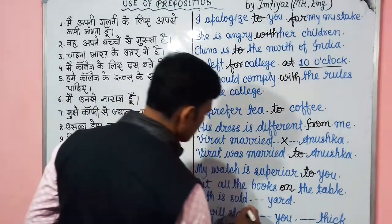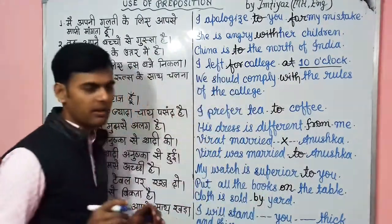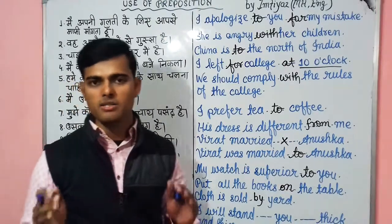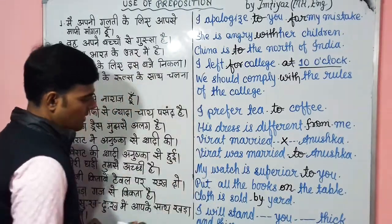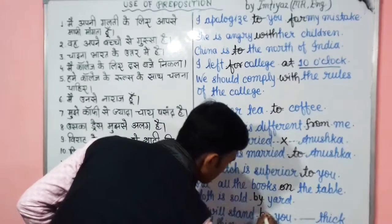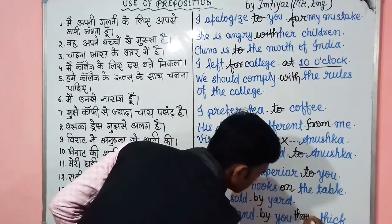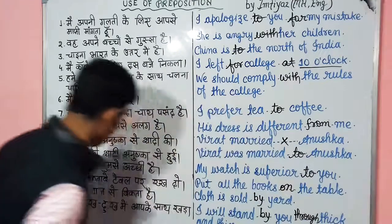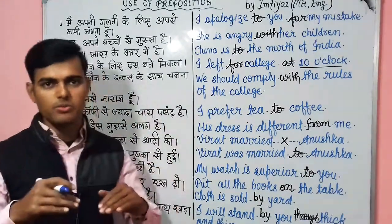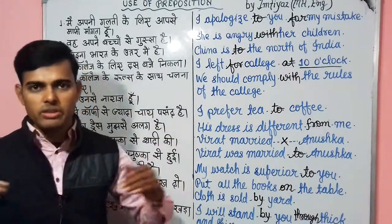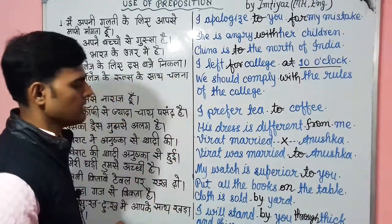कपड़ा गज से बिकता है — Cloth is sold by the yard. अंडे दर्जन से बिकते हैं — Eggs are sold by the dozen. I will stand by you through thick and thin — मैं सुख-दुख में आपके साथ खड़ा रहूँगा। 'Stand by you', न कि 'stand with you'.